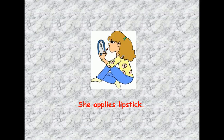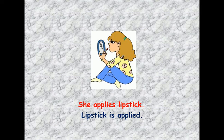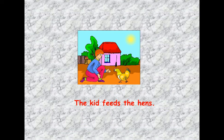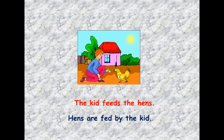'She applies lipstick' becomes 'Lipstick is applied' — we don't add 'by her' because she is unknown; we don't know who she is, and it's not a proper noun. 'The kid feeds the hens' — the subject is 'the kid,' the action is 'feeds,' and the object is 'the hens.' So we say: 'Hens are fed by the kid.'